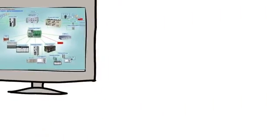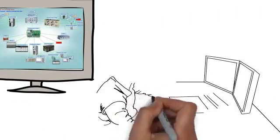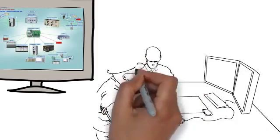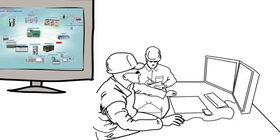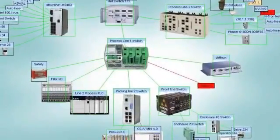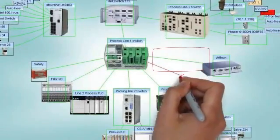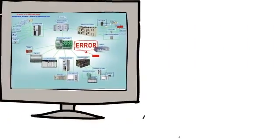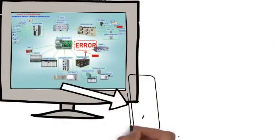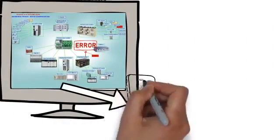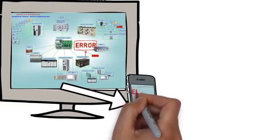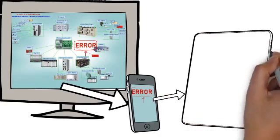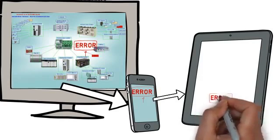With IntraView, you get a live visual display of how everything is connected. This simple visual display is also designed to make sense to maintenance technicians. And because IntraView is designed for your environment, it will quickly identify the subtle network issues that are unique to the applications and automation systems, allowing you to quickly identify potential problems before they interrupt your application and cause costly downtime.